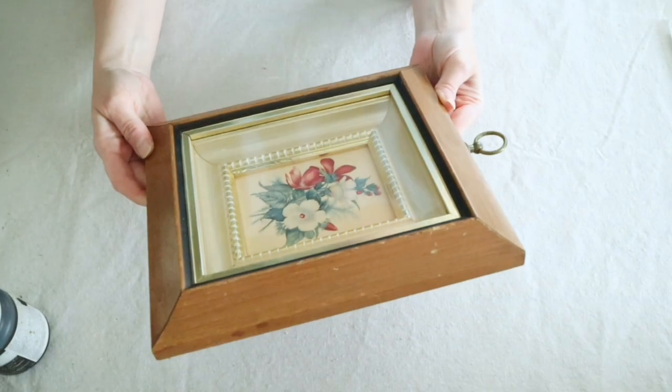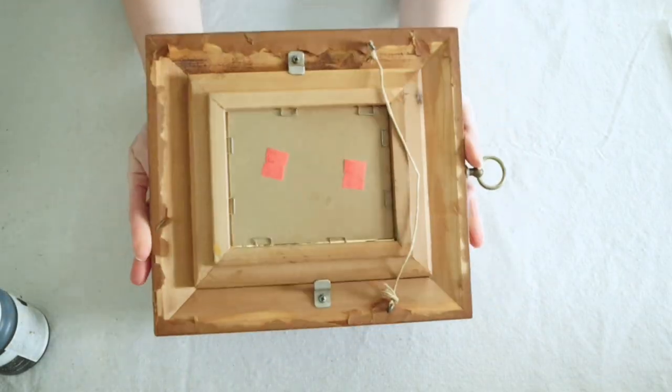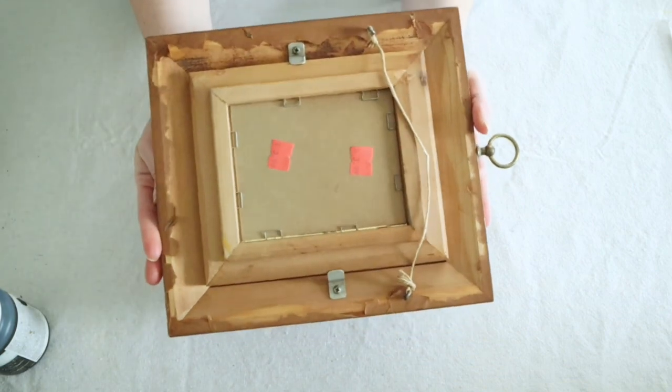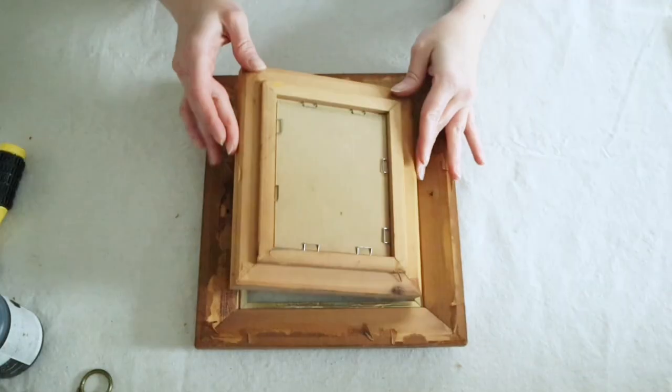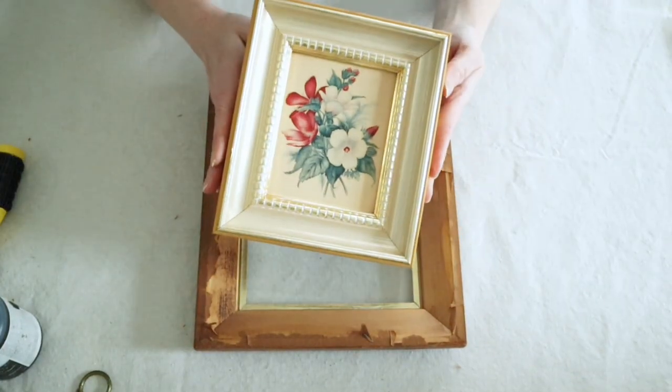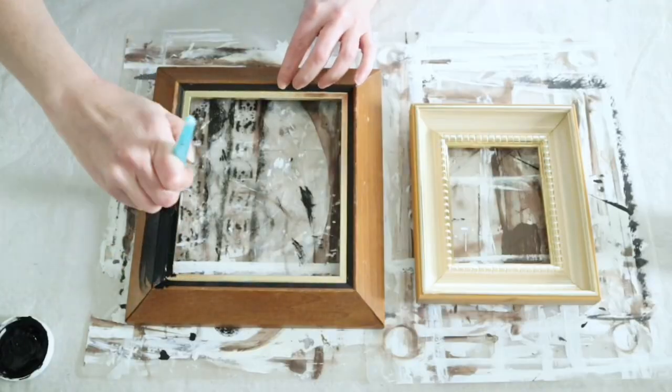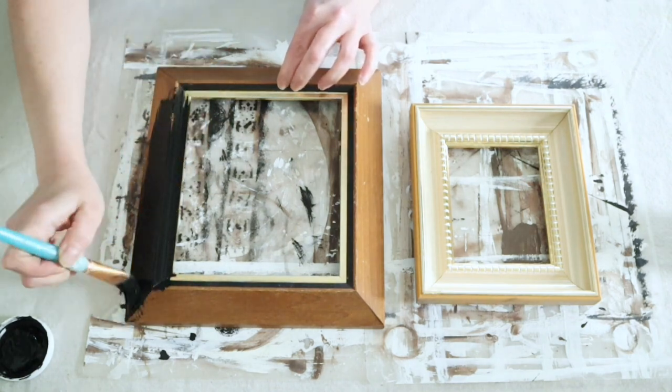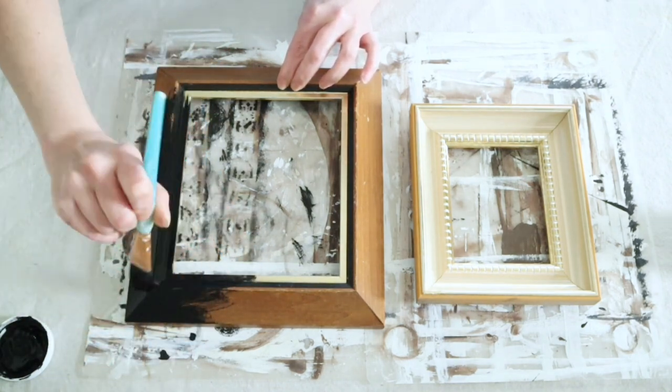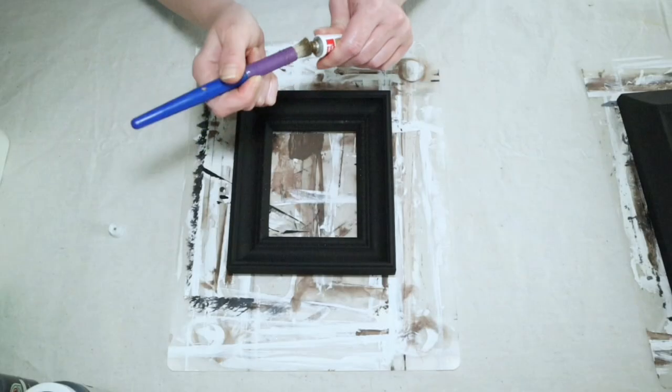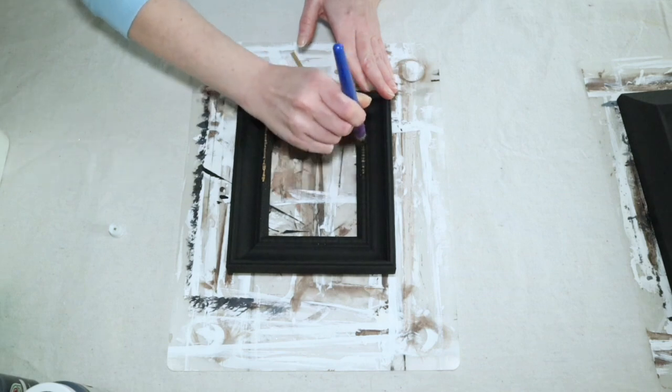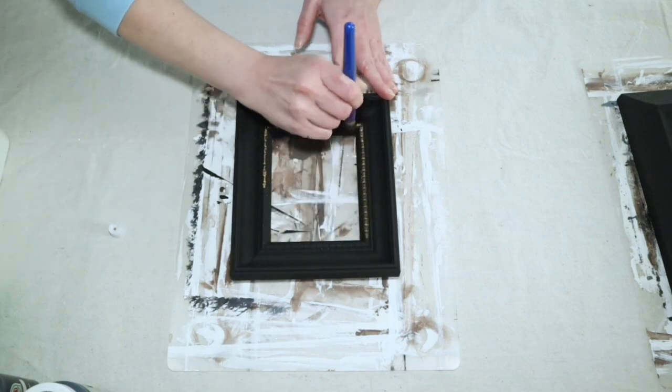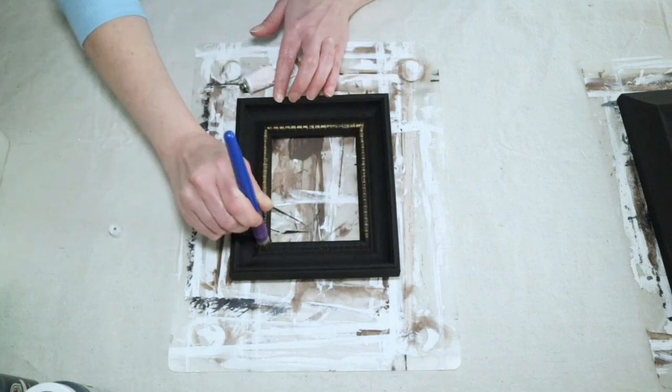For this next project, I picked up this little shadow box frame from my local thrift store. The first thing I needed to do was take everything apart, including taking out the smaller frame from the shadow box frame. To make these a little spooky, I am painting both of these little frames with two coats of my black chalk paint. Once they were both dry, I took some of my European gold rub and buff and I just went over the detail on the smaller frame, and then I also did a little bit of detail on the larger one.